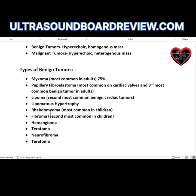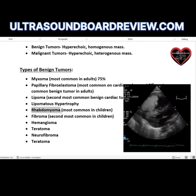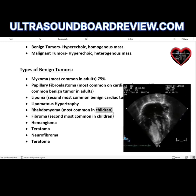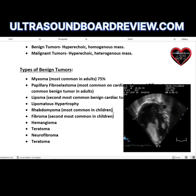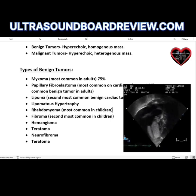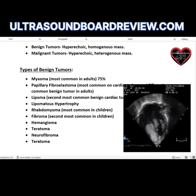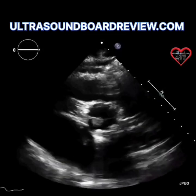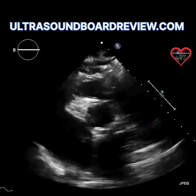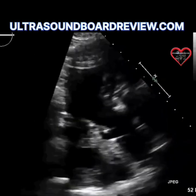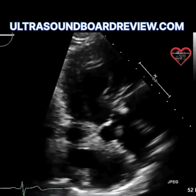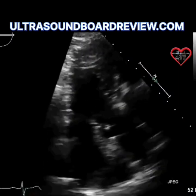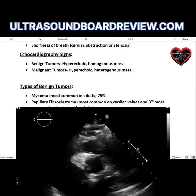Myxomas are the most common benign tumors in adults at about 75%. Rhabdomyomas are the most common benign tumors in children and infants, and they will sometimes regress as the patient ages. Fibroma is the second most common benign tumor in children. The third most common is papillary fibroelastoma, which is more commonly found on the mitral valve, though it can also be seen on the aortic valve and other valves.